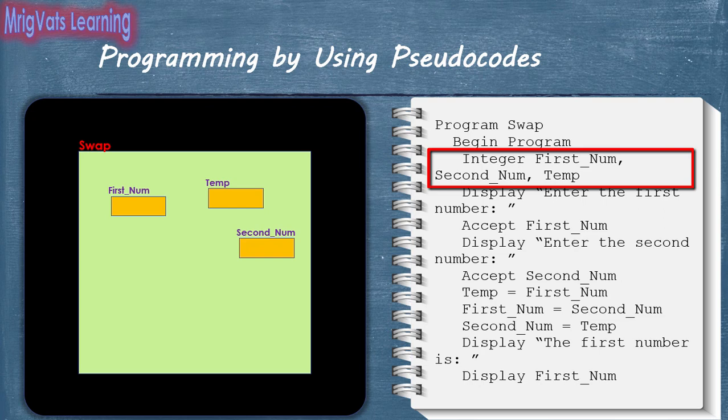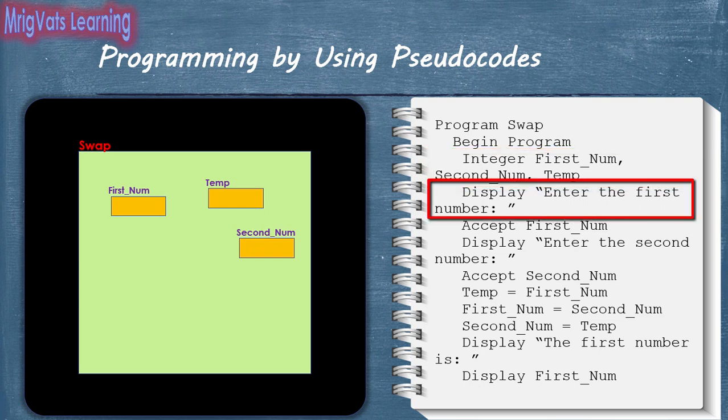We will use these memory chunks to store the values of the first and second numbers accepted from the user. Additionally, we will use the temporary variable temp to perform internal manipulations of data in the program. I have used the integer data type for these variables because if a user enters a large number, a text type variable might consume more memory compared to the integer type.